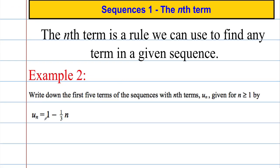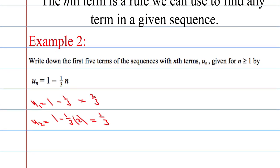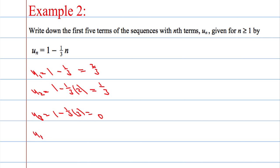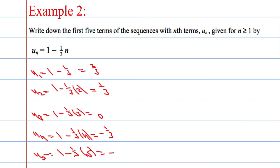So again we're going to write down the first five terms of the sequence given below. u(1) will be 1 minus 1 third. u(2) will be 1 minus 1 third times 2, which is 1 minus 2 thirds, which is 1 over 3. u(3) is 1 minus 1 over 3 times 3, which is 0. u(4) is 1 minus 1 over 3 times 4, which gives us negative 1 over 3. And finally u(5) equals 1 minus 1 over 3 times 5, which gives us negative 2 over 3.